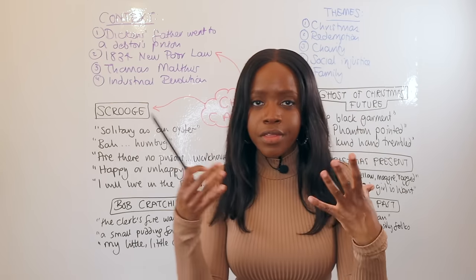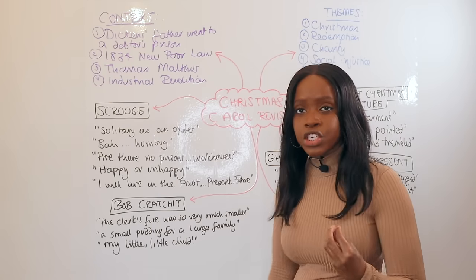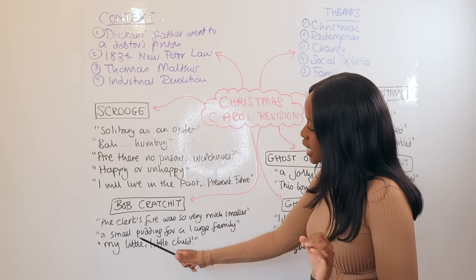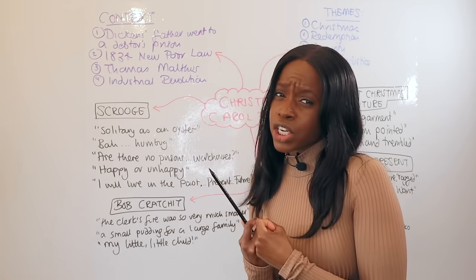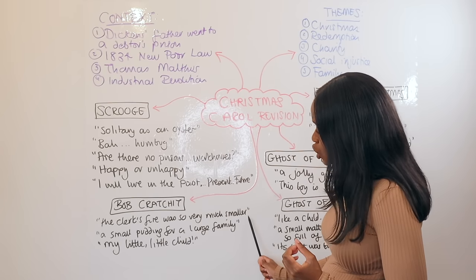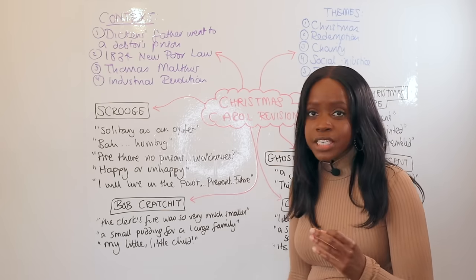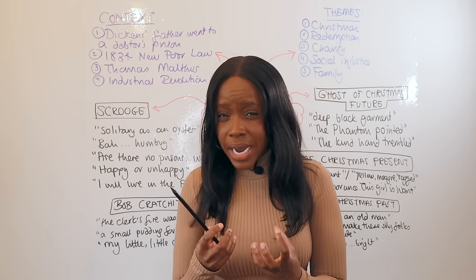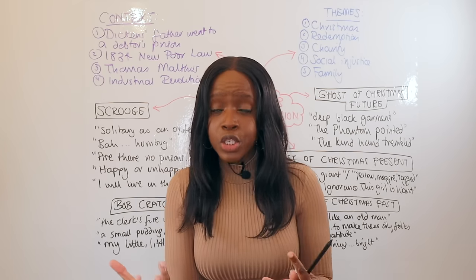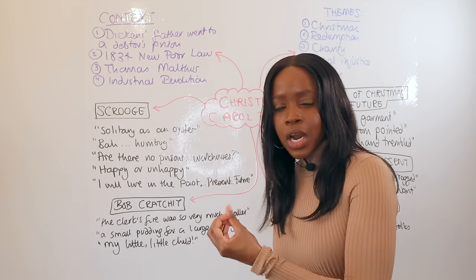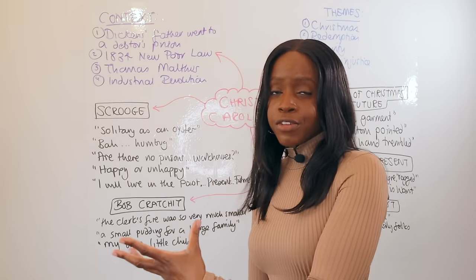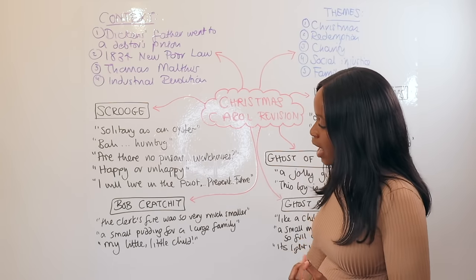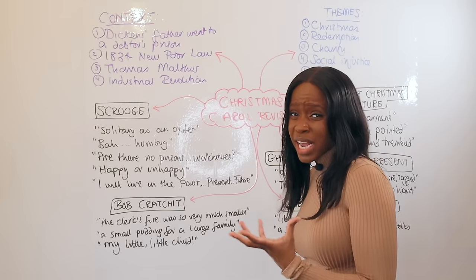The second key character is Bob Cratchit, who is a symbol of the poor. The first quotation to remember is that his 'fire was so very much smaller' — the comparative adjective 'smaller' combined with the noun 'fire' illustrates how miserly Scrooge was, but equally how Bob Cratchit, like most poor people, was very accustomed to being mistreated by his employer. It symbolizes how working-class poor people in Victorian England were used to such treatment.